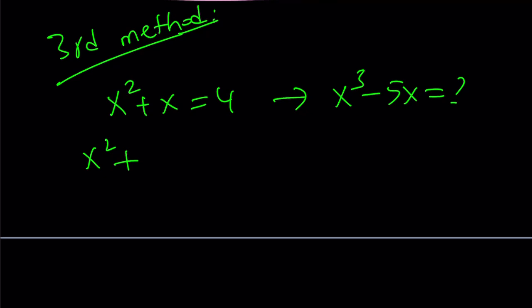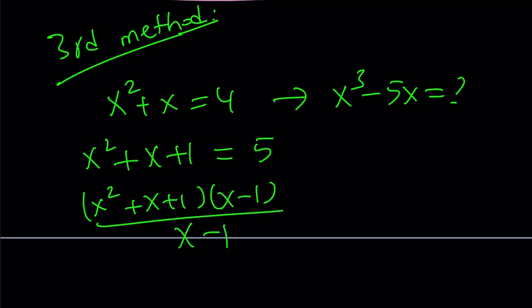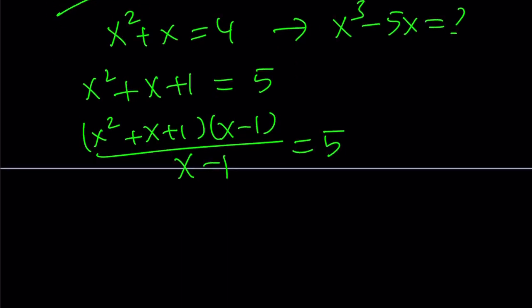I'm going to add 1 to both sides. My goal is to use the difference of 2 cubes formula. If I multiply this by x minus 1 and divide by x minus 1, nothing bad is going to happen because x equals 1 does not satisfy the original equation. Something nice happens in the numerator. This becomes x cubed minus 1 from difference of 2 cubes.